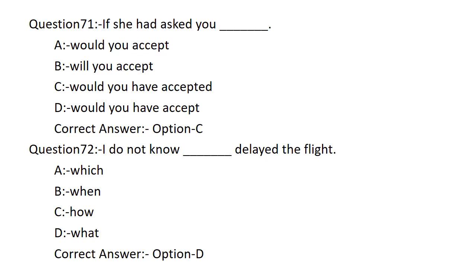If she had asked you, dash? Option A: WOULD YOU ACCEPT. Option B: WILL YOU ACCEPT. Option C: WOULD YOU HAVE ACCEPTED. Option D: WOULD YOU HAVE ACCEPTED. Option C is the correct answer — WOULD YOU HAVE ACCEPTED.